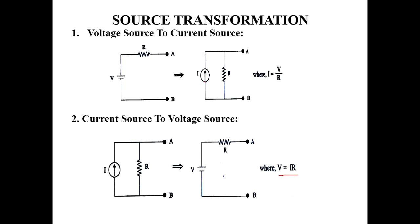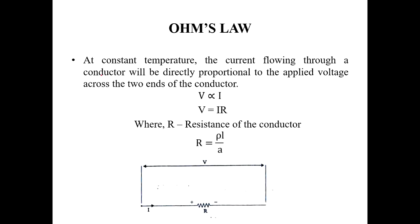Ohm's Law states that at constant temperature, the current flowing through a conductor is directly proportional to the applied voltage across its two ends — that is, V is proportional to I. Adding the constant R, we get V equals IR, where R is the resistance of the conductor and R equals rho L divided by A. The current flowing through a resistor is I, and the voltage drop across it is V equals IR.